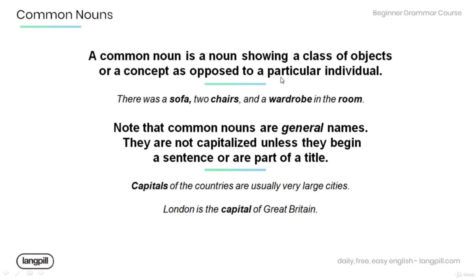A common noun is a noun showing a class of objects or a concept, as opposed to a particular individual. For example: there was a sofa, two chairs, and a wardrobe in the room. Note that common nouns are general names.